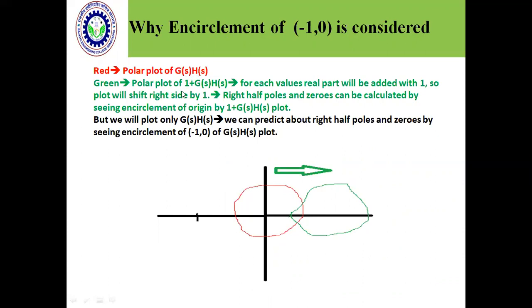So the green color we have made is 1 plus G(s)H(s). So what happens in 1 plus G(s)H(s)? As I mentioned earlier, the real part represents this, the imaginary part represents this. So what happens in the real part? That one will be added. Simply one will be added here. That means the whole plot will be set on the right side.